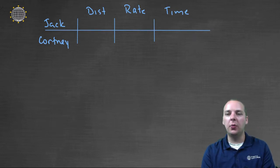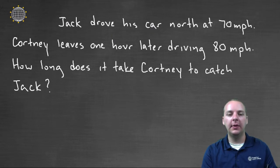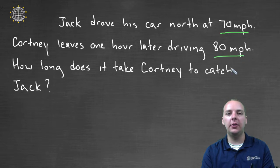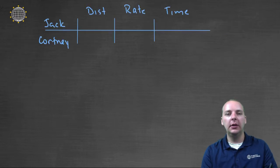So let's go back to the word problem, and let's see what we can decipher. Let's see, I see Jack drove seventy miles an hour, and Courtney drove eighty. So Jack's rate is seventy, Courtney's rate is eighty.